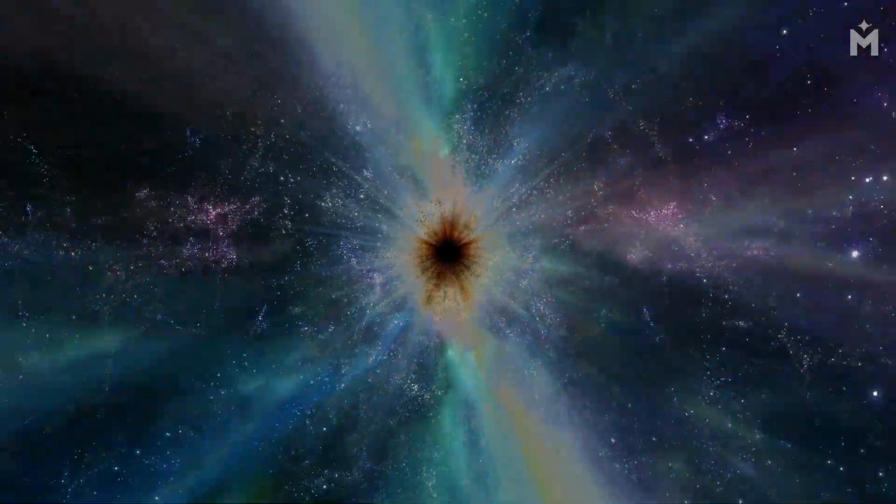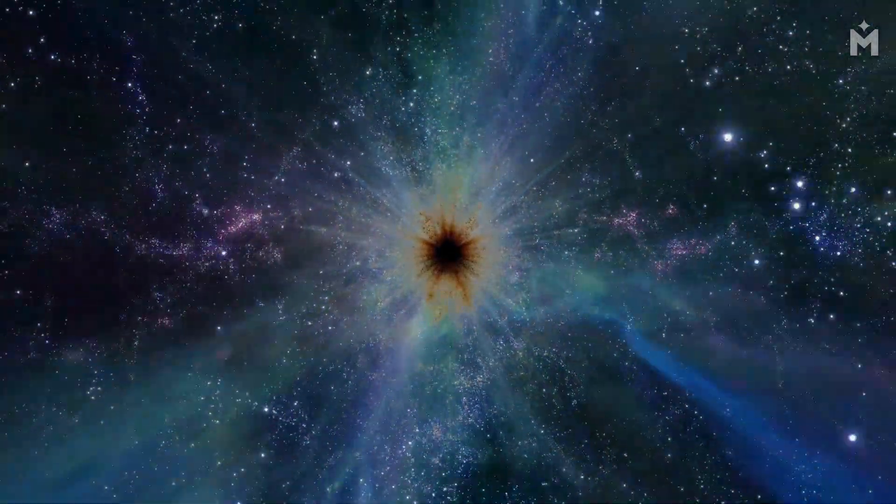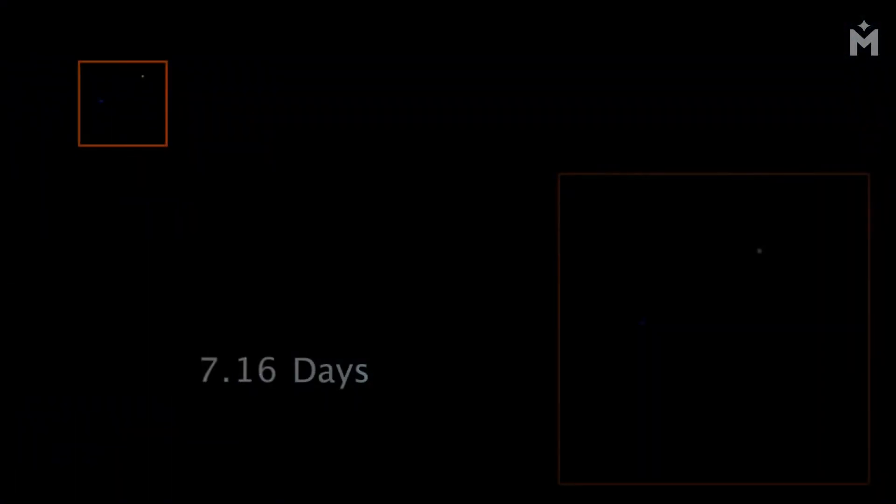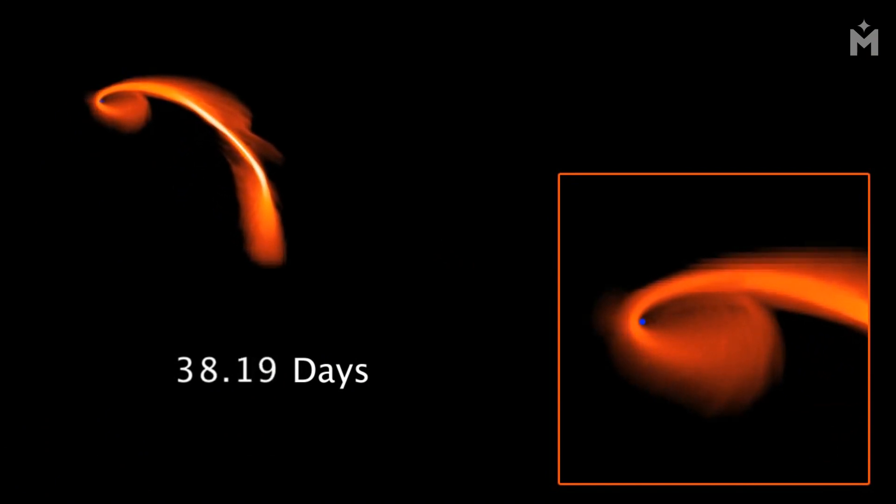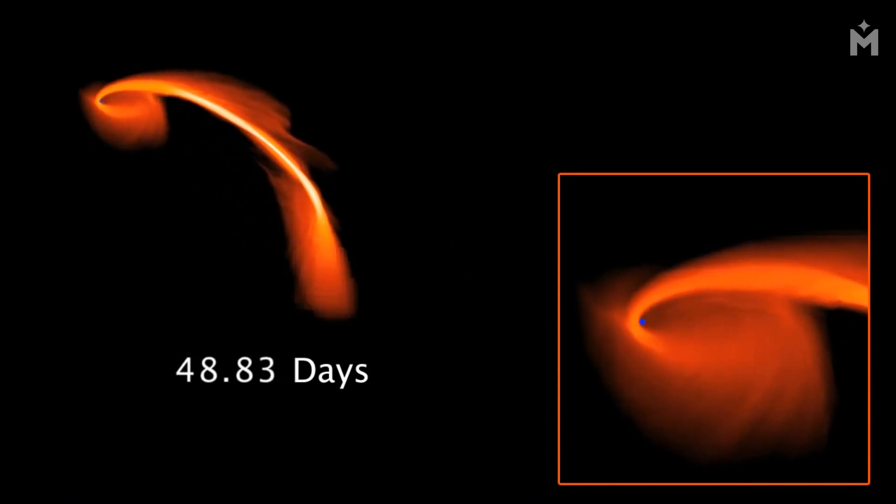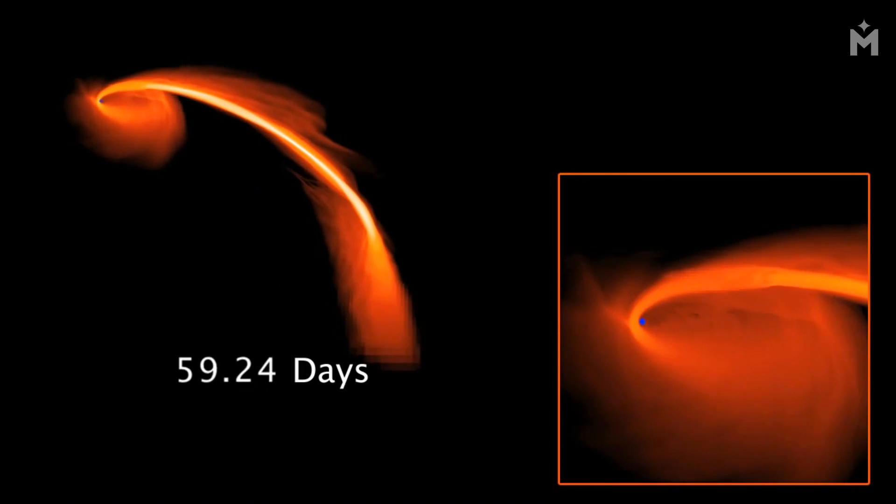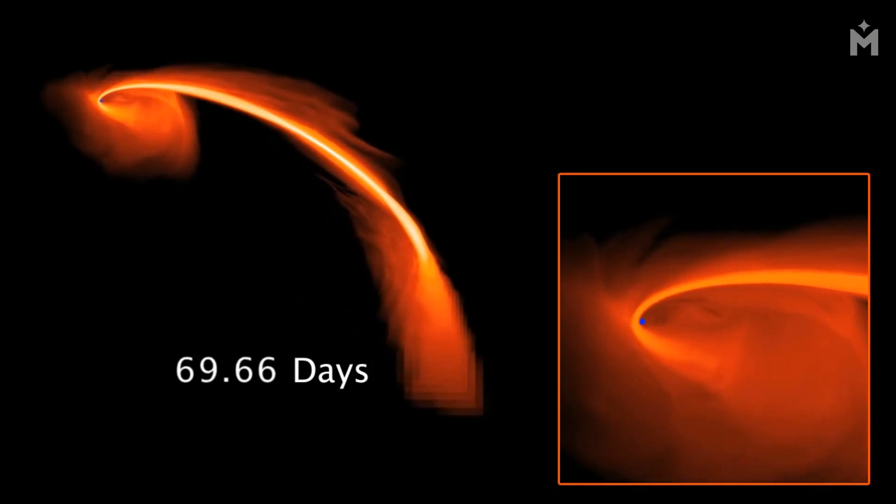When a star gets too close to a black hole, it gets pulled in by the black hole's gravity. The star then gets torn apart by the black hole's extreme gravitational force. This process is called spaghettification, because the star gets stretched out like spaghetti. The star's remains are then pulled into the black hole and disappear.